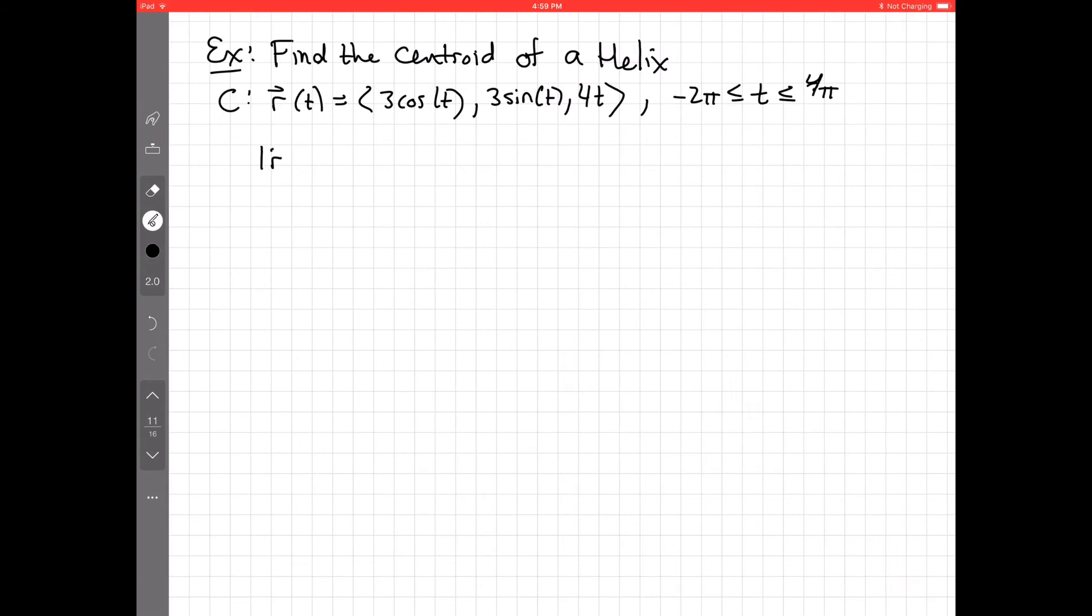And if we do that, well, first of all, we need to compute the length of the derivative. And we've done that before. I'll just say that that comes out to be 5. The derivative of r is negative 3 sine, 3 cosine, 4. And then you work out the length of that. Everything collapses down. You end up with 5. Okay. So, mass. Our total mass. We want the integral of 1 ds. This is just the arc length of our helix. And so, we're going to end up integrating from negative 2 pi to 4 pi. And the length of the derivative, our arc length element here is just 5. So, we end up with 5 dt. That's our ds. And so, this is just 5 times the length of that interval. That's 5 times 6 pi, which is 30 pi. So, there's our total mass.